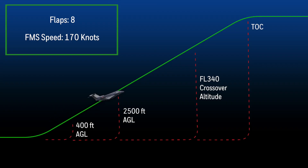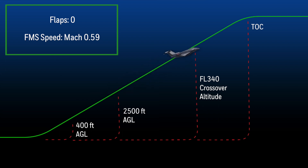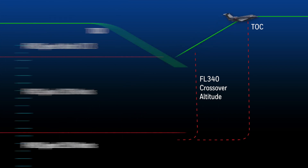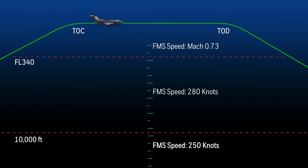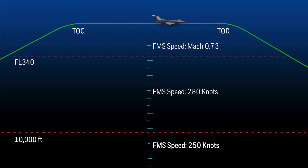As the aircraft continues the climb to altitude, the FMS target speed changes to Mach 0.59 at flight level 340. When the aircraft reaches the cruise altitude, the target speed changes to the cruise speed set in the altitude and speed tab in the flight management window.